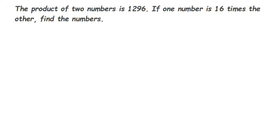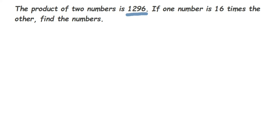This is a question on squares and square roots. The question is: the product of two numbers is 1296. If one number is 16 times the other, find the numbers. We have been given that the product of two numbers is 1296, and the relationship that the first number is 16 times the other number.